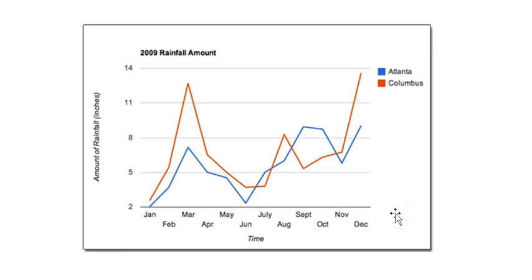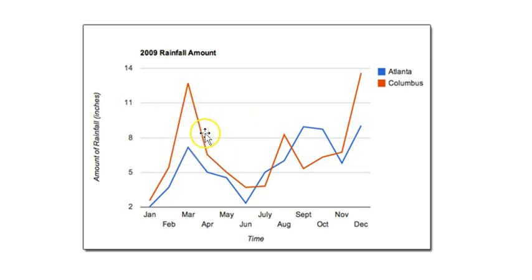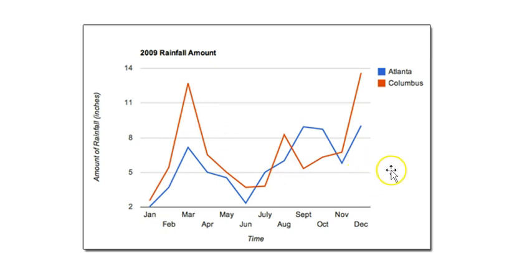But what is this graph telling you in total? Looking at the whole thing, it tells you that the rainiest seasons in both cities tend to be different — it rains more in Columbus in the spring than in Atlanta, but you see a higher amount of rain in Atlanta in September. In December there's a drastic increase in Columbus. These lines cross over a lot, so it's hard to make a very general statement, but those are examples of what you can see from the graph overall.